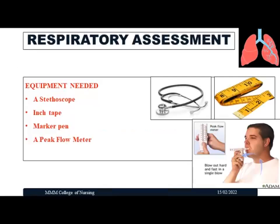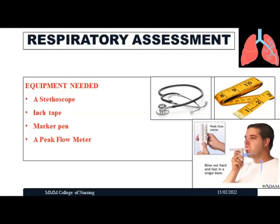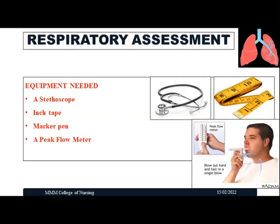The equipment needed for a respiratory assessment includes a stethoscope, inch tape, marker pen, and a peak flow meter. The stethoscope is used to assess abnormal breath sounds. The inch tape measures chest circumference or anterior-posterior diameter. The marker pen locates important landmarks on the chest. The peak flow meter assesses the physiological function of the lungs.